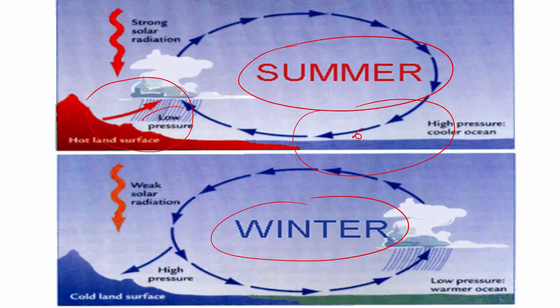So you have colder temperatures and higher pressures on land. So the air now wants to move from the higher pressure on land towards the lower pressure on the ocean, and we will have to add Coriolis to this.